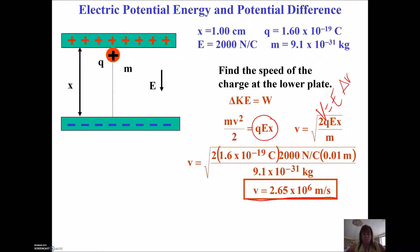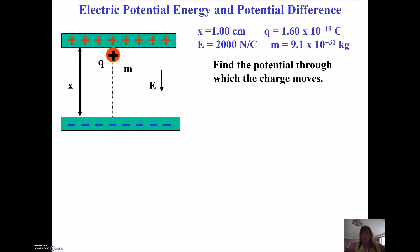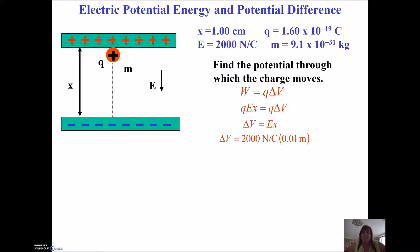One more thing — what if I wanted to find the potential through which the charge moved? We could say work equals Q delta V, or we could say the electric field times the distance equals the voltage — V equals E times d. So we just multiply 2000 by 0.01 and get 20 volts.